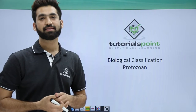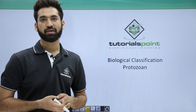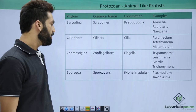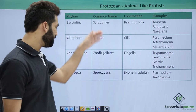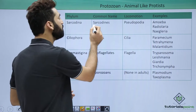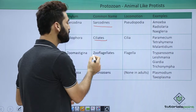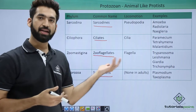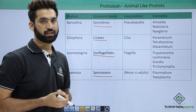In this session we'll be discussing animal-like protista members, those in the group called Protozoa. When you talk about Protozoa, there are basically different types. We'll be talking about sarcodines, ciliates, zoo flagellates, and sporozoas. The names are given according to the mode of locomotion they have.